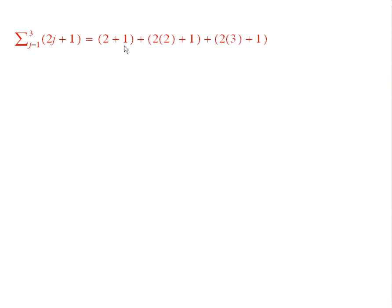So here are the numbers that result. You have 2 plus 1, that's when j is equal to 1. And when j is equal to 2, you have 2 times 2 plus 1. That would be the next term. And then when you plug in j equal to 3, you have 2 times 3 plus 1. And so you add all of these up, and you end up with 15.